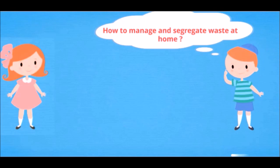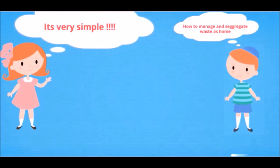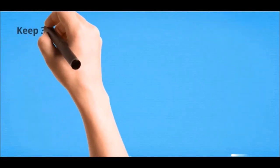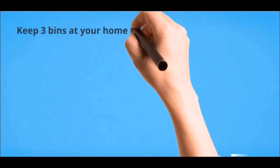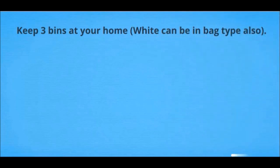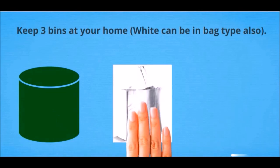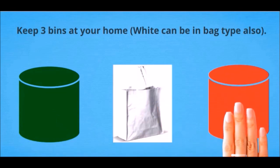But how to manage and segregate waste at home? It is very easy and simple. Keep three bins at your home - green, white, and red.